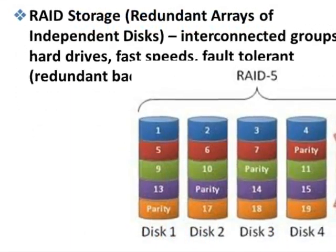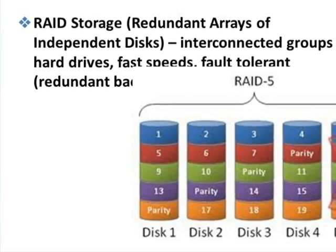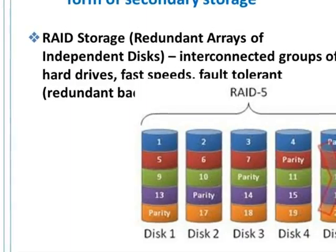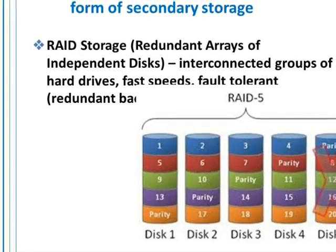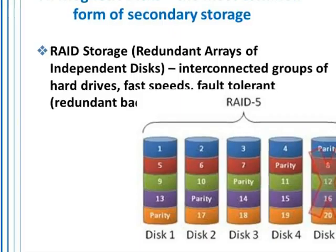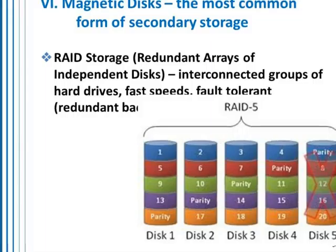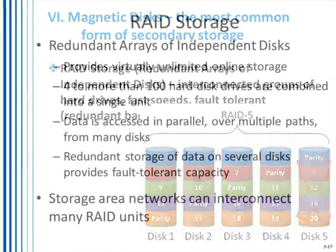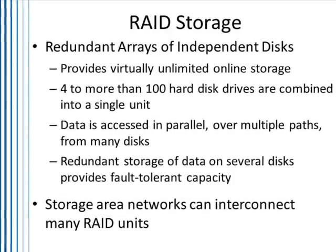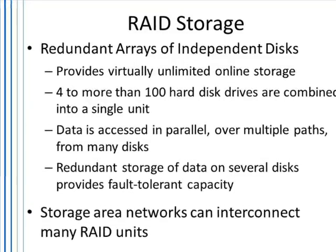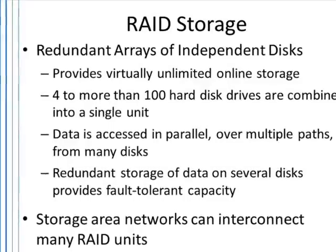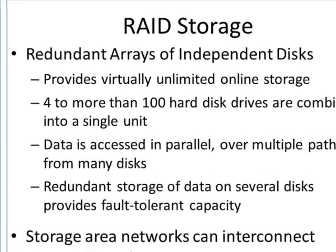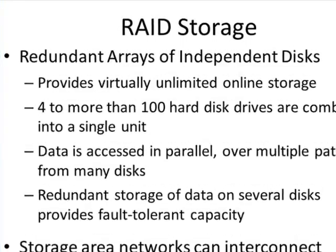RAID — Redundant Arrays of Independent Disks — are interconnected disks where information is striped across them. Parities on either quadrant allow any one of those disks to be removed and still contain all the data between them. The reason we spend a lot of time on this is because as business people, you want to make sure your data is backed up and stored with enough redundancy so you don't lose any data. Data loss is now one of the primary means of business disruption — businesses go out of business if they don't have their data.